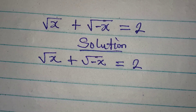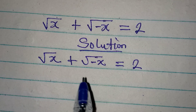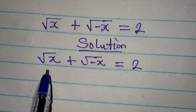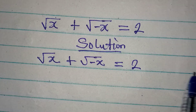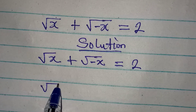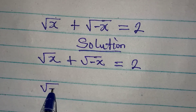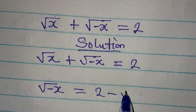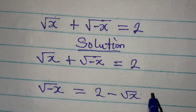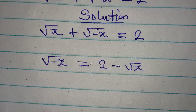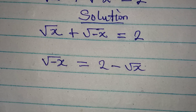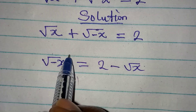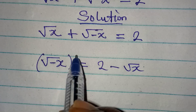Let's solve it and see the outcome. The first thing I want to do is take this term to the other side, so I have negative square root of negative x equal to 2 minus square root of x. From here, what I would do is square both sides.